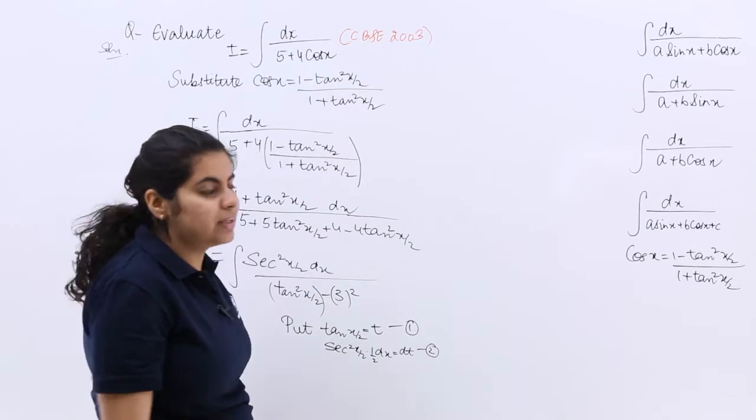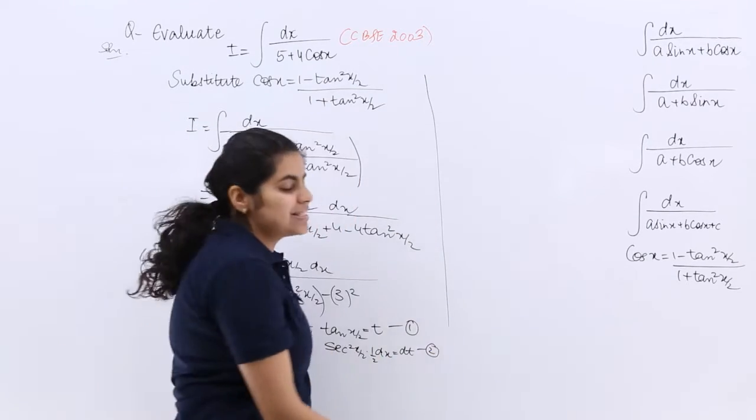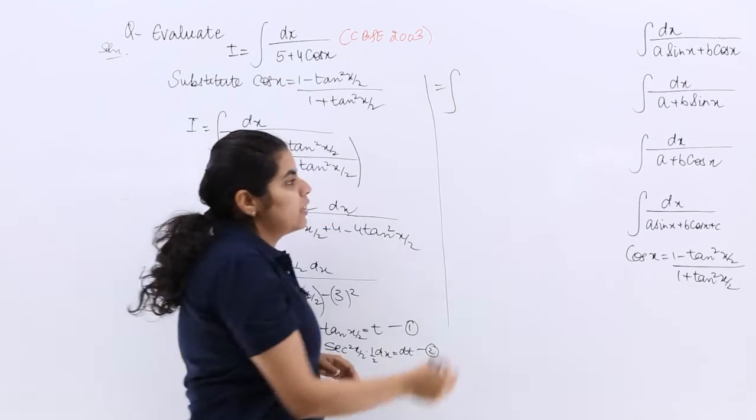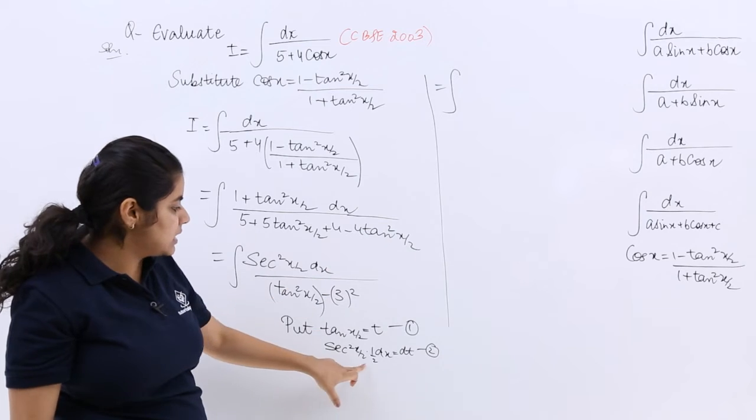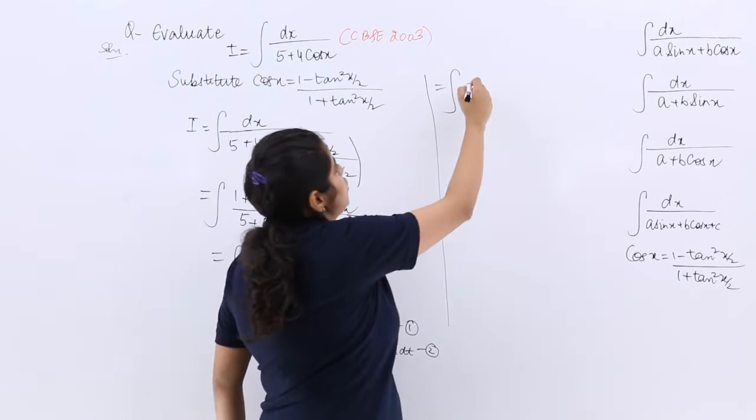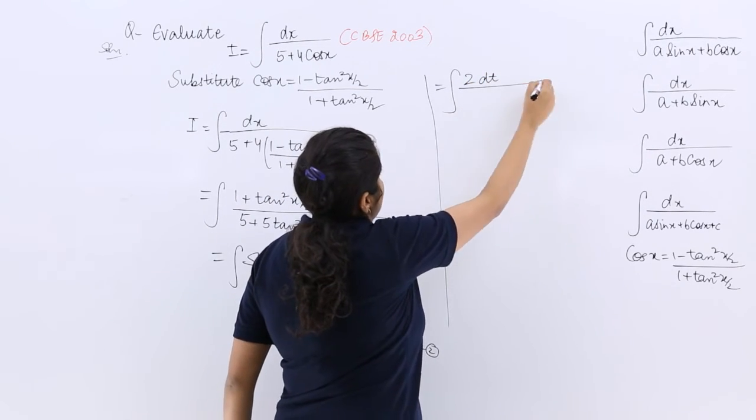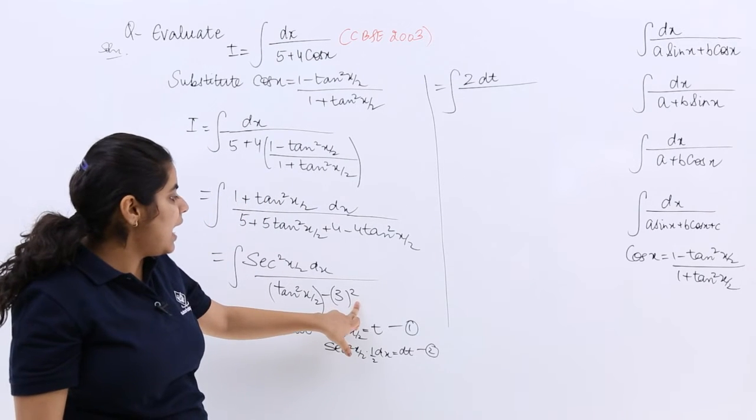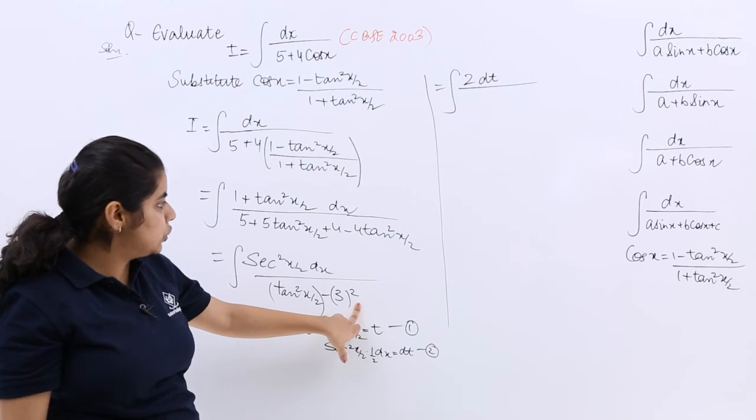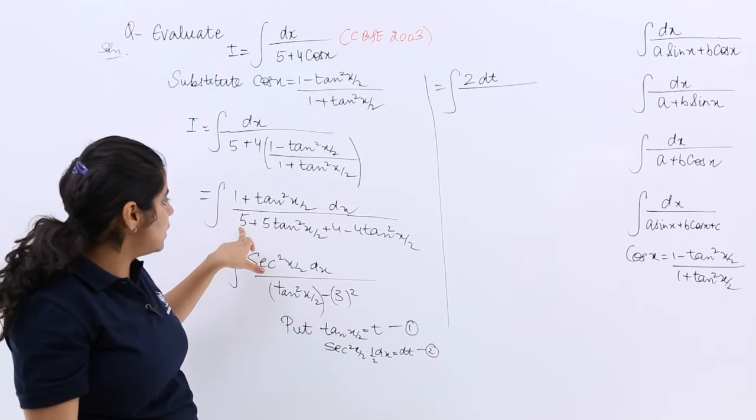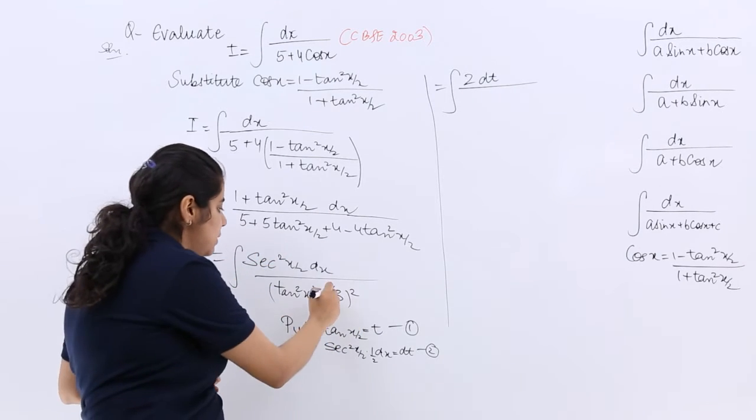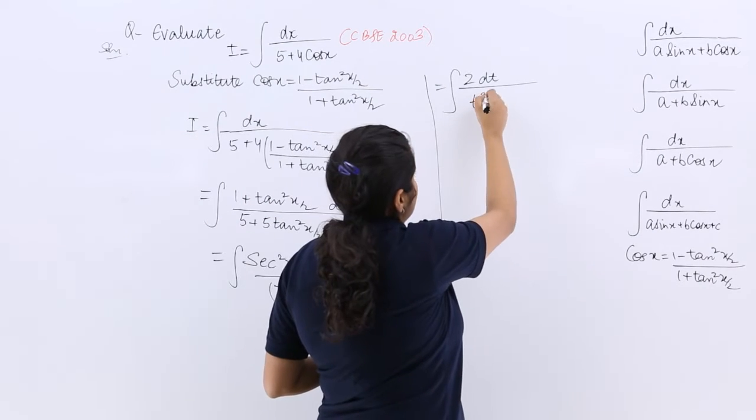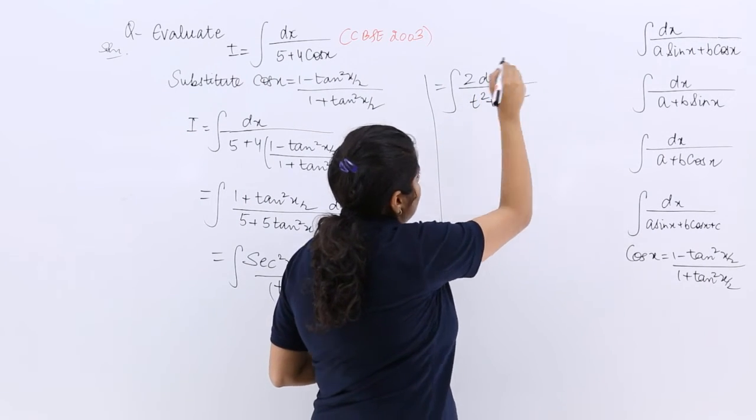Now, you can directly substitute it for the next steps in the second column of the board. It equals—now sec²(x/2) dx value is 2dt. So it is 2dt/(tan²(x/2)), which is t, and here it is 3². And you can see 5 plus 4 was 9. So there is one mistake, this should have been plus. Now, t² + 3².